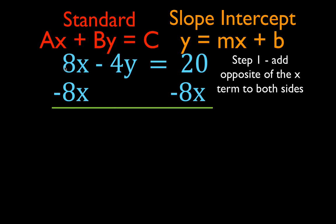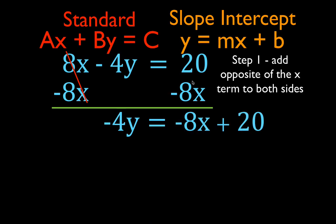When I add minus 8x to both sides, I already have a positive 8x on the left-hand side, so the 8x is cancelled. I am left with simply minus 4y. Don't forget your minus signs. Bring down the equal sign. Now minus 8x plus 20 — these are not like terms — so it is simply minus 8x plus 20.